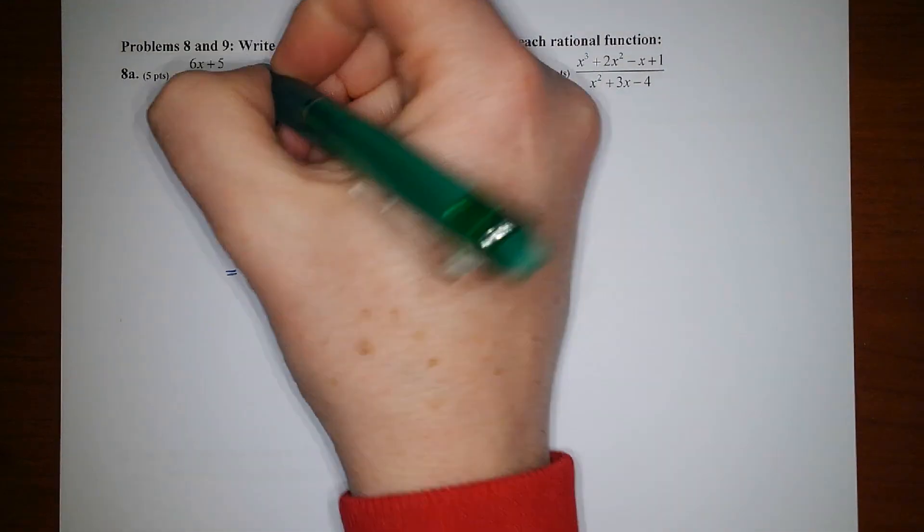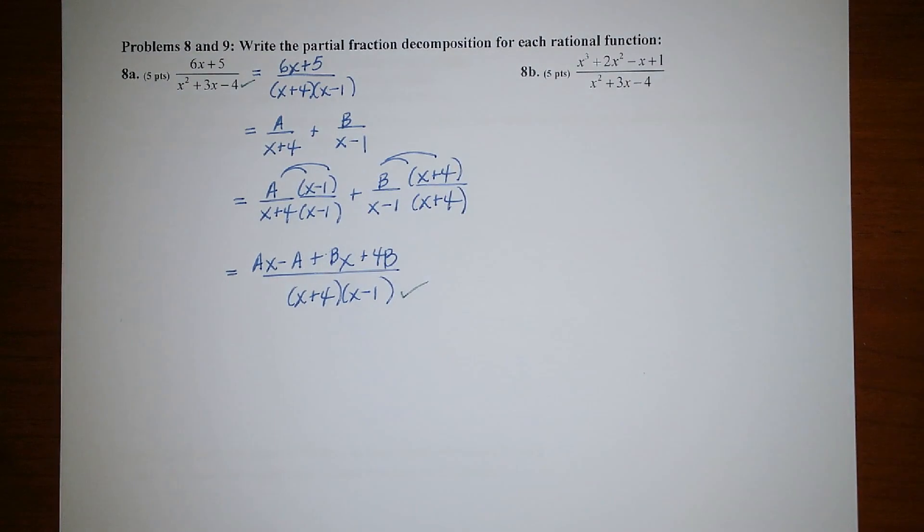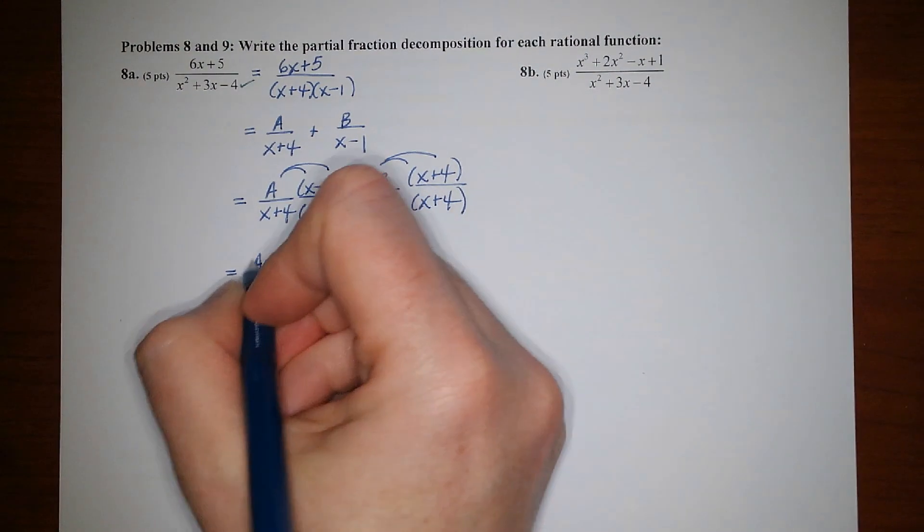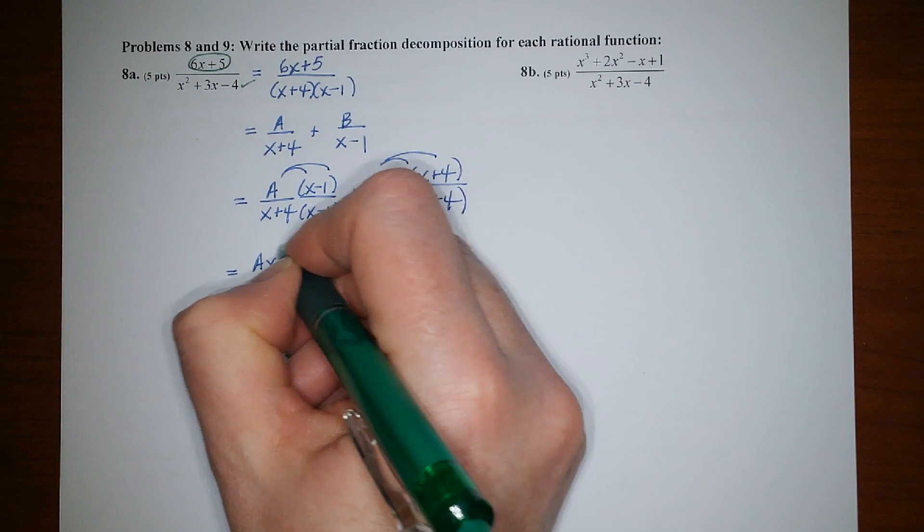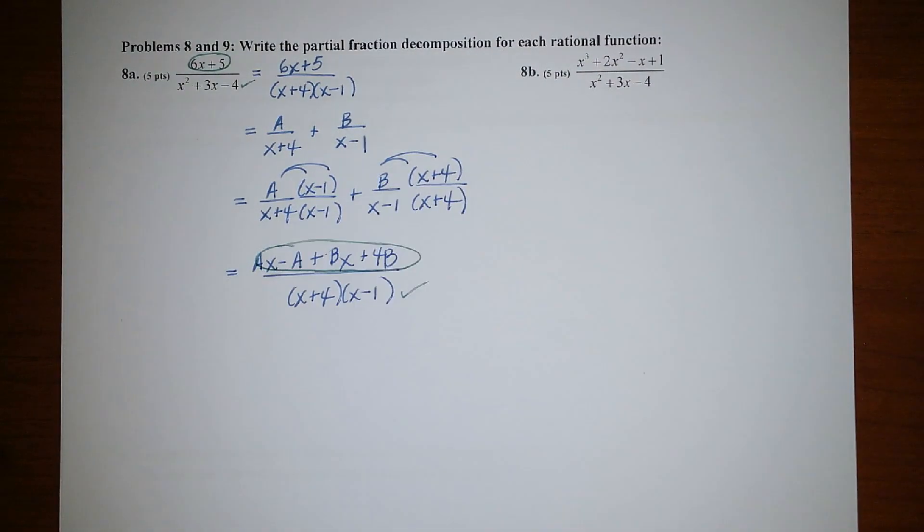So at this point, I have won the denominator battle. Now it would just be a matter of forcing the numerators to equal each other. So forcing 6x plus 5 to equal this expression here.